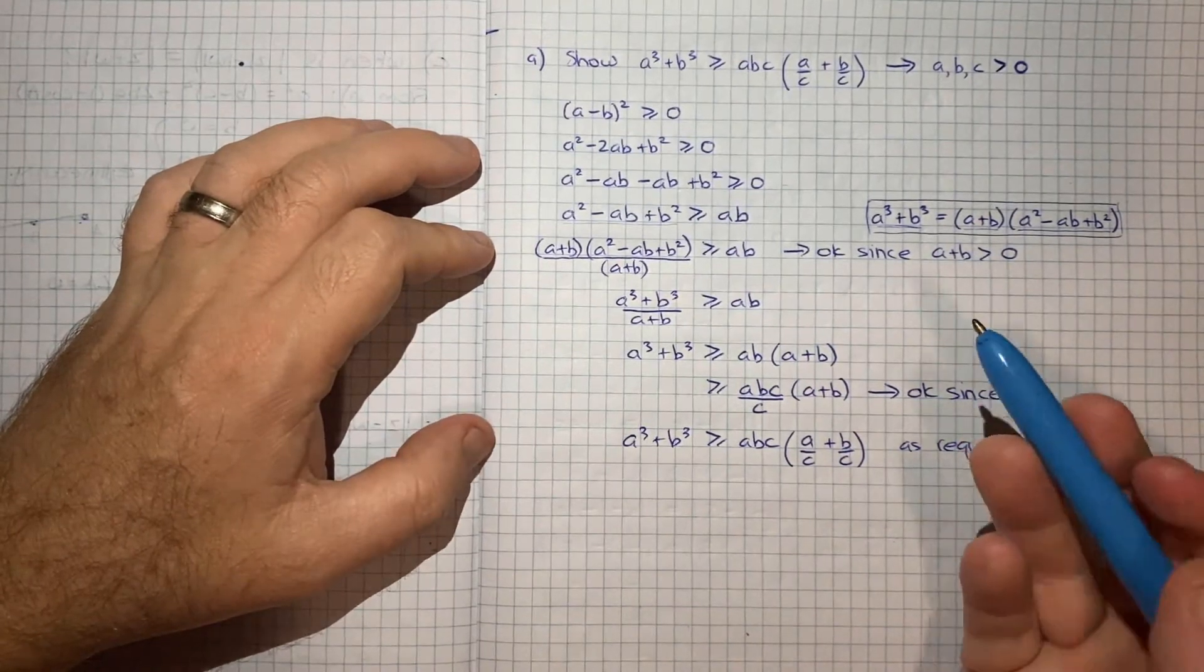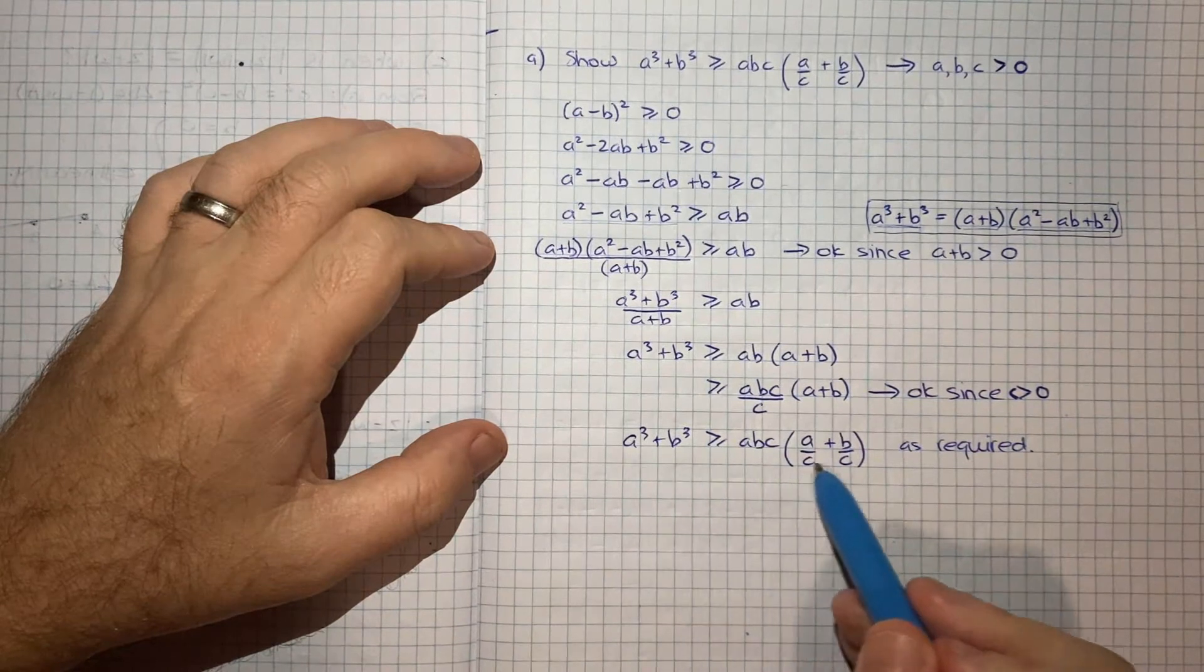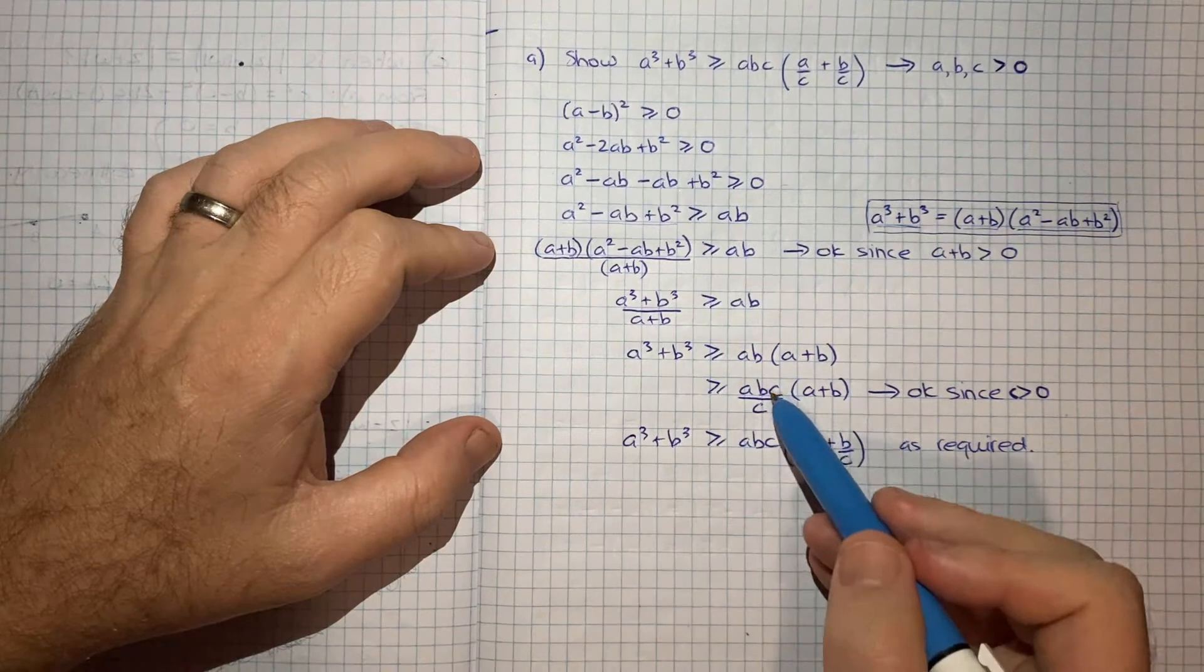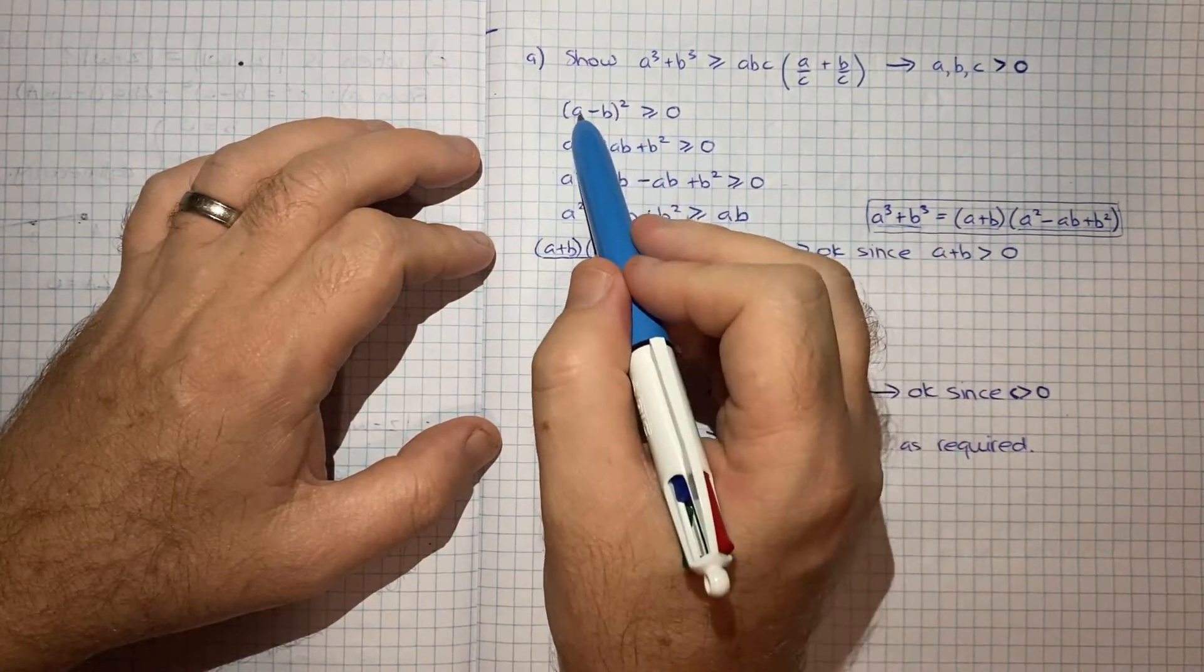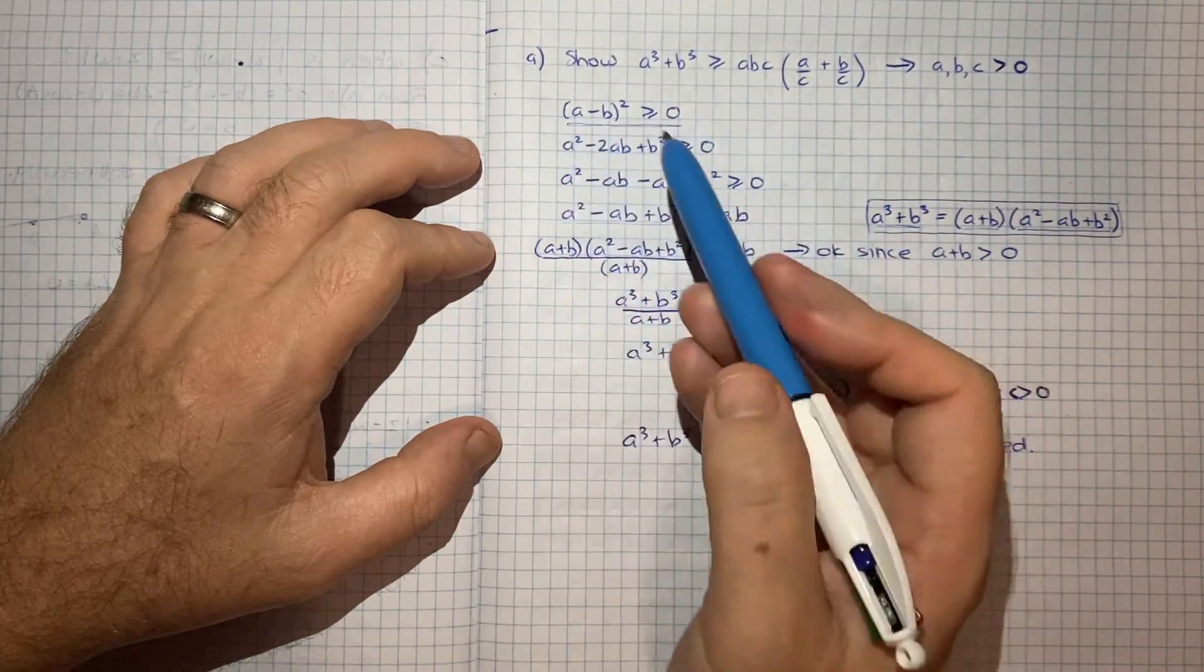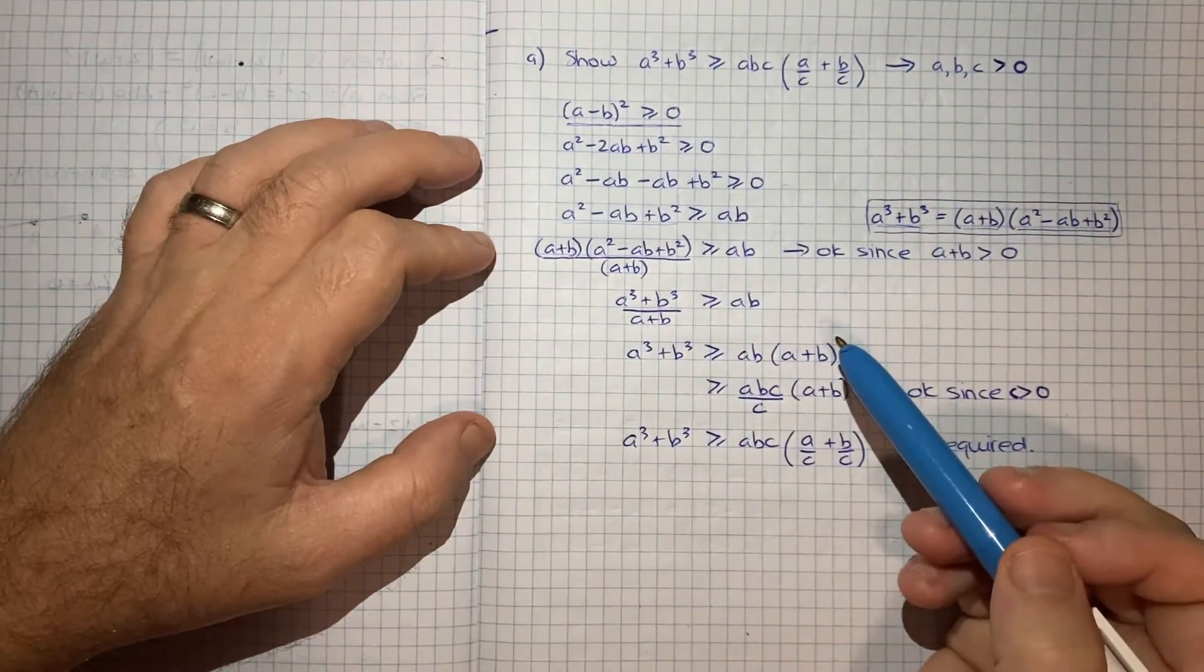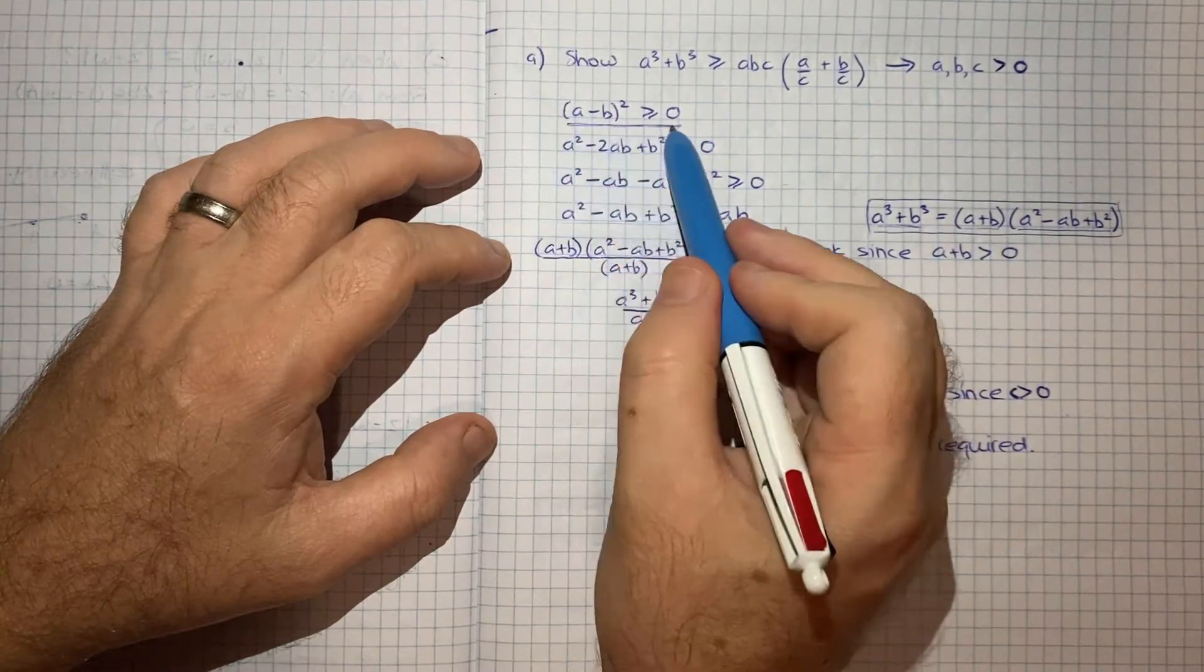So again, as I mentioned at the beginning, if you were to start from this point and start playing around, it's very likely that you would have essentially gotten these steps in reverse and hopefully ended up with something like this, which becomes a valid starting point because this is true. This is something we know for sure. So it's almost like an axiom that we can use as the building block for our proof.